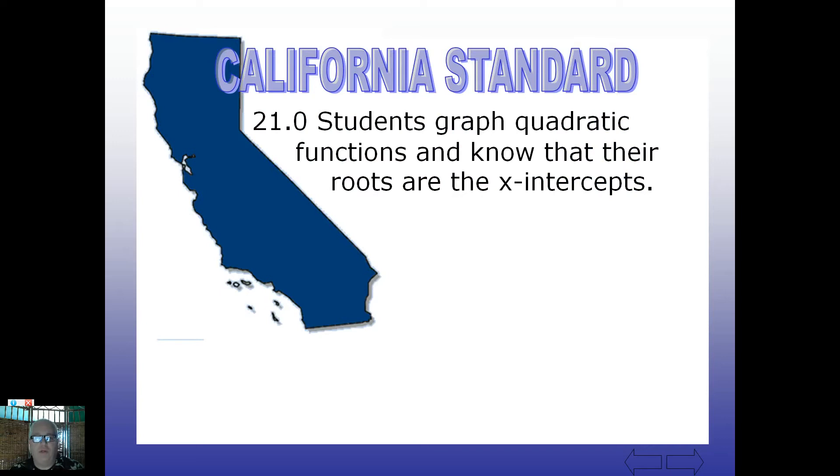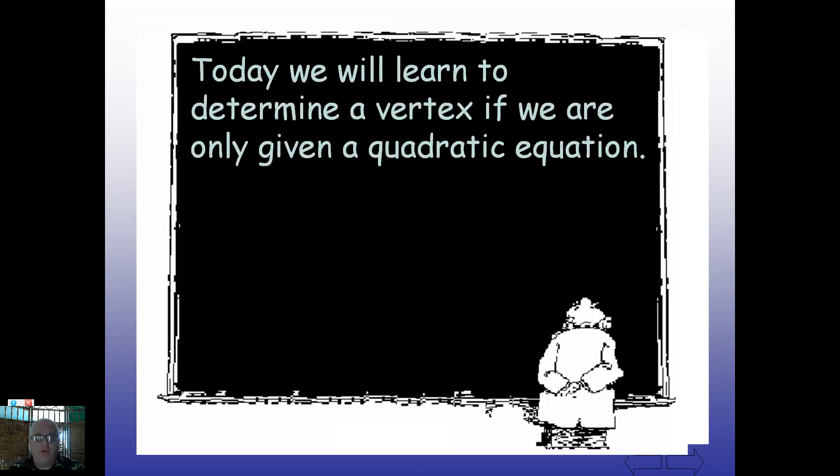All right, we're still in standard 21.0, and today we're going to learn to determine a vertex if we're only given a quadratic equation. Remember the vertex is the high point or low point of any parabolic function, but we need an exact point sometimes. We're going to be able to do that without a picture.